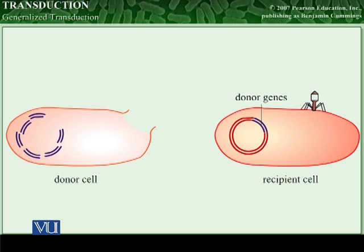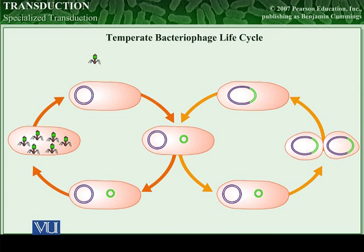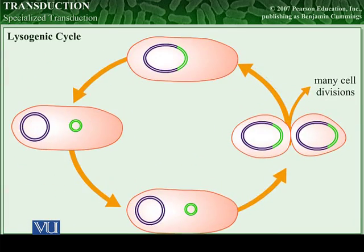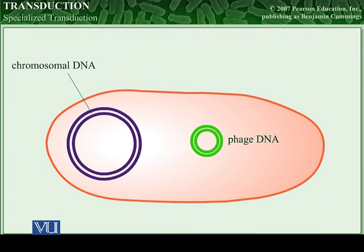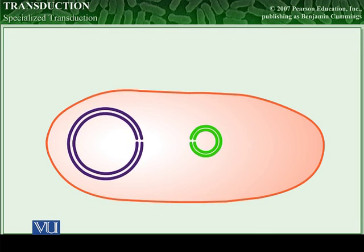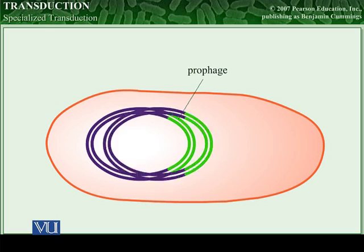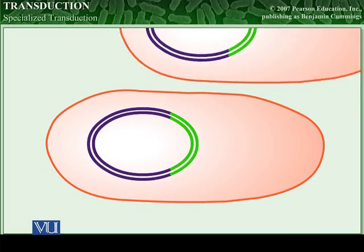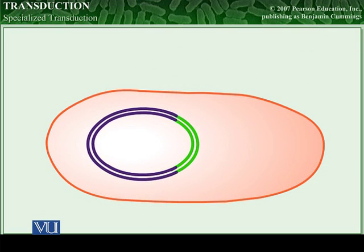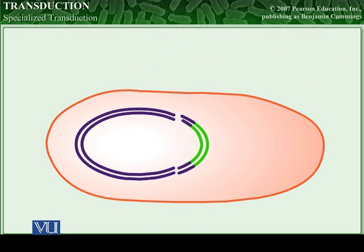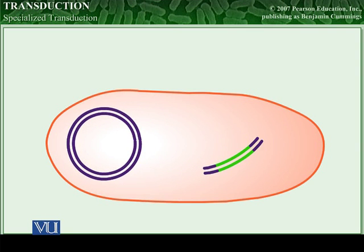Now let's watch specialized transduction. Specialized transduction is initiated during the lysogenic cycle of temperate bacteriophages. During the lysogenic cycle, phage DNA becomes incorporated into the bacterial chromosome and is now called a prophage. It can be transferred to subsequent generations each time the DNA is replicated. During induction, when the prophage is excised from the host chromosome, it occasionally takes with it some of the bacterial chromosomal genes.